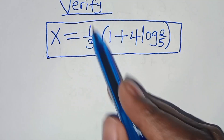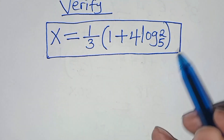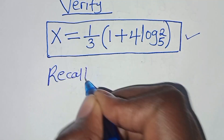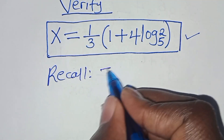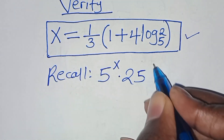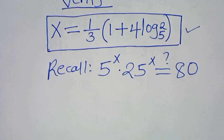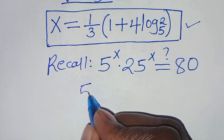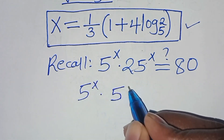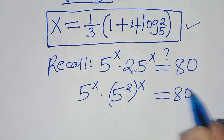Let's verify that the value of x, which is 1 over 3 times the quantity 1 plus 4 log 2 to base 5, satisfies the equation. Recall that we have 5 to the power x times 25 to the power x, which should give us 80. Here, 25 is the same as 5 to the power 2, raised to power x, which should give a value of 80.